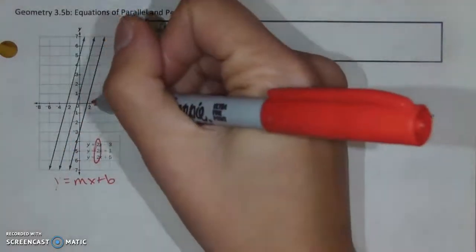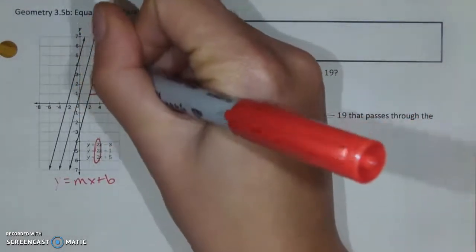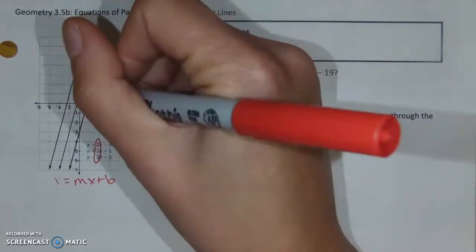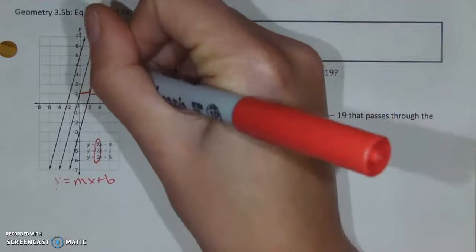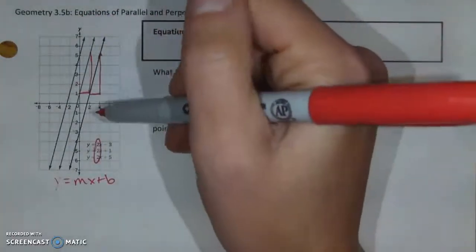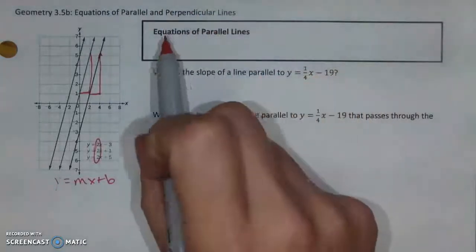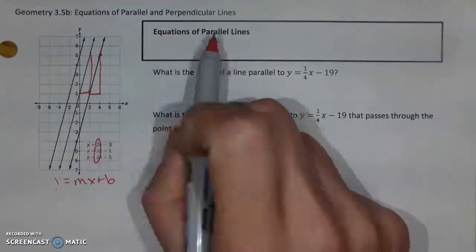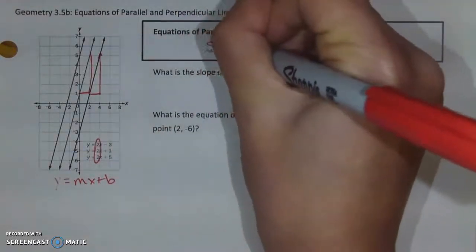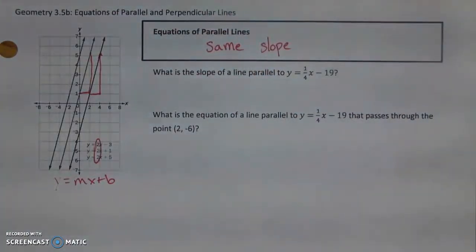That makes sense for parallel lines, because parallel lines have the same rate of increase — that same slant from one to the next. If they didn't have that same increase, or that same slant, it means that they'd eventually intersect, which we know parallel lines do not do. Practically, all I need to remember for the equations of parallel lines is that they will have the same slope.